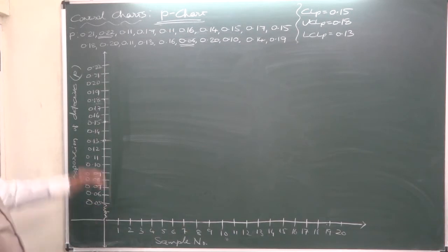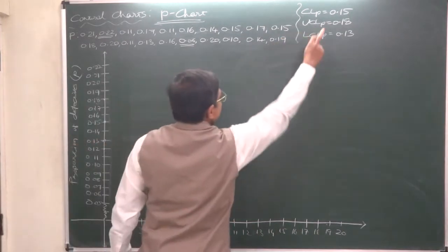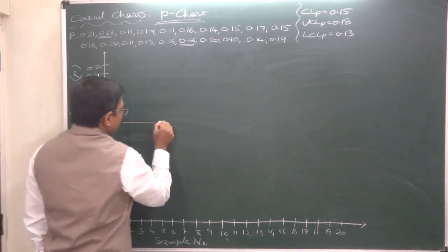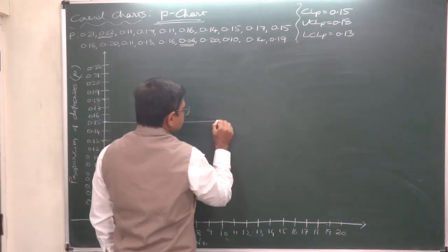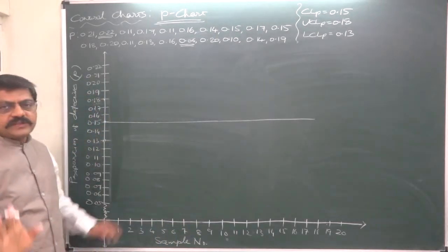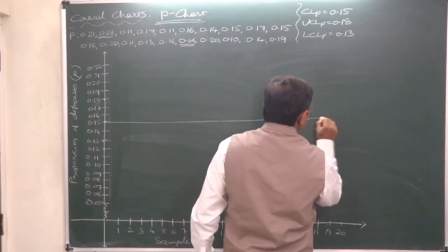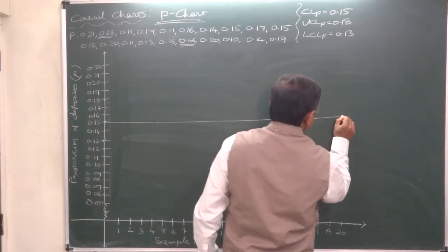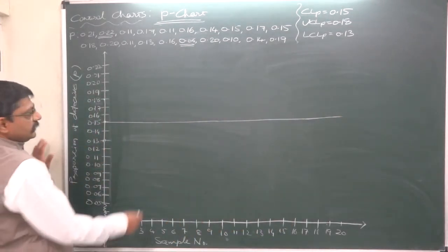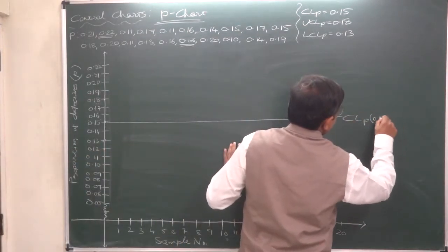First, the central line, which is always drawn as a continuous line. The central line is 0.15, and all lines go parallel to the X-axis. I will draw just a rough sketch of the chart, but please try to draw your graph as neatly and accurately as possible.